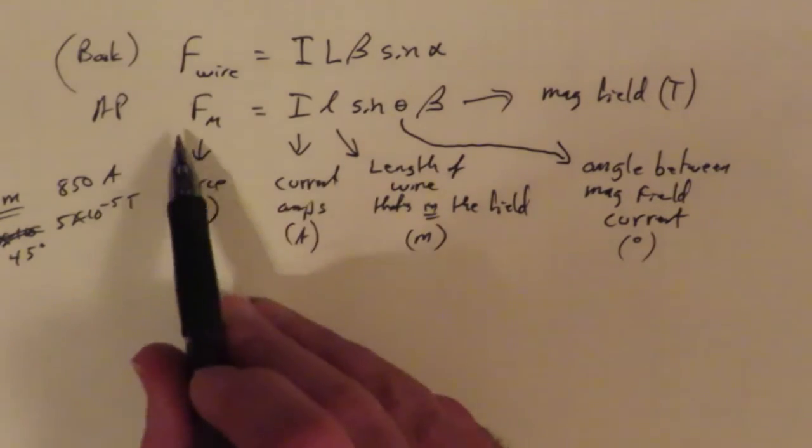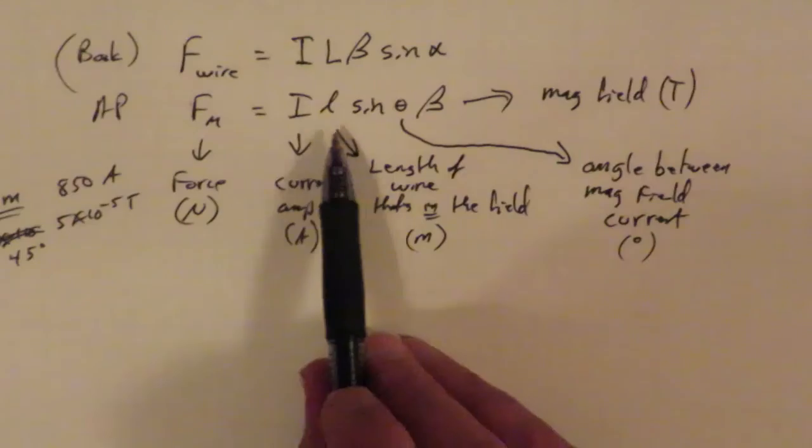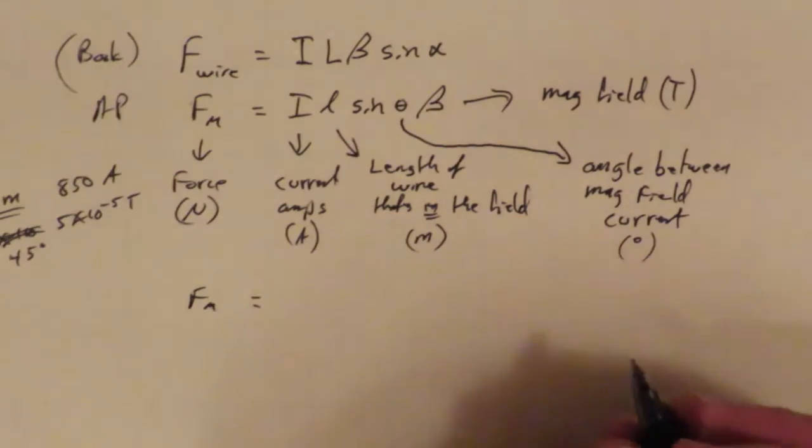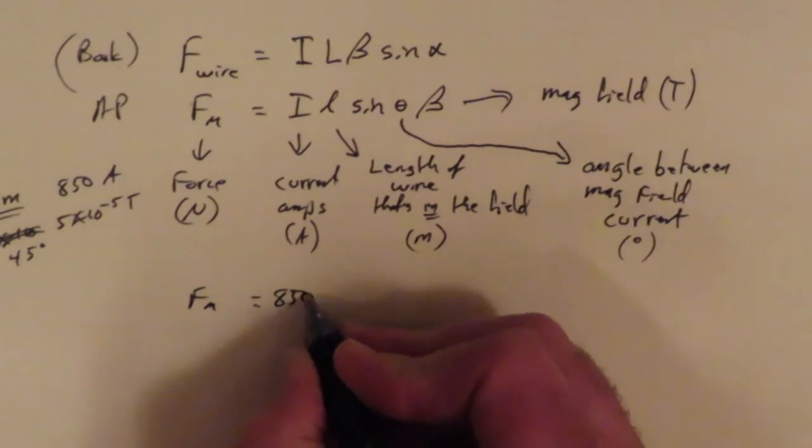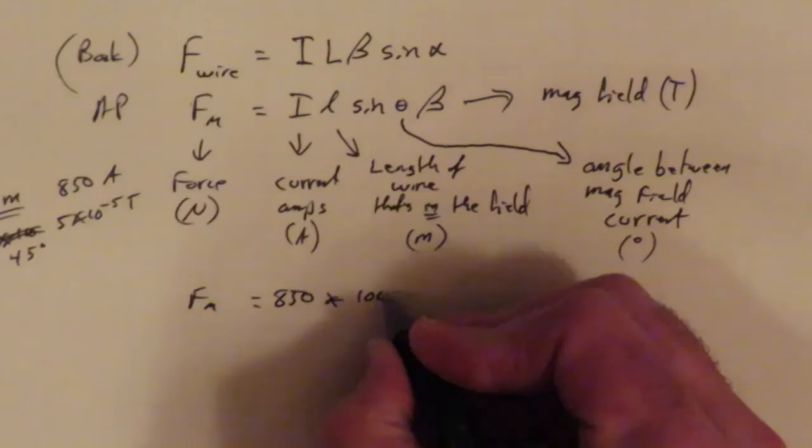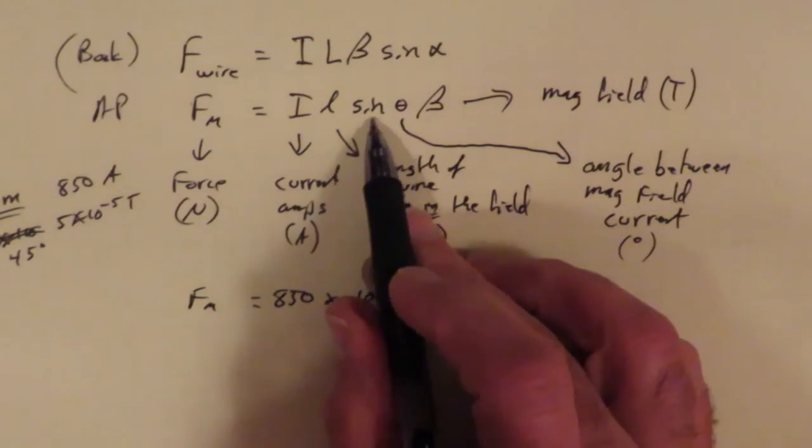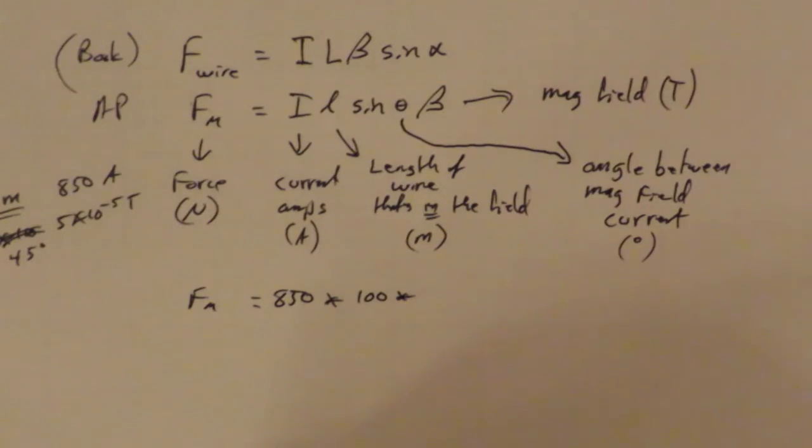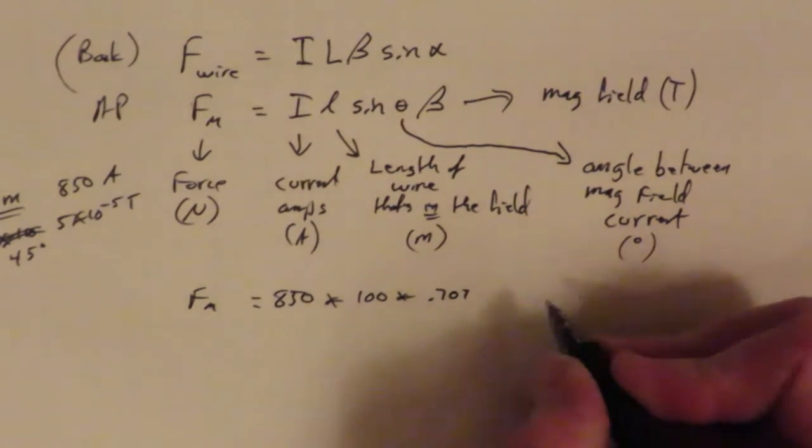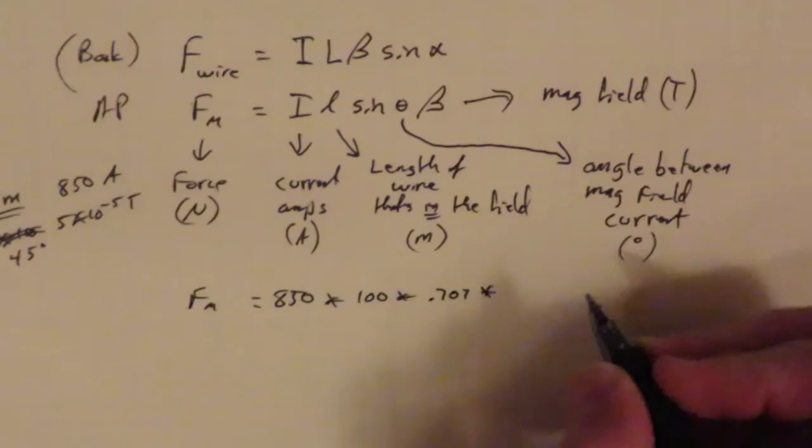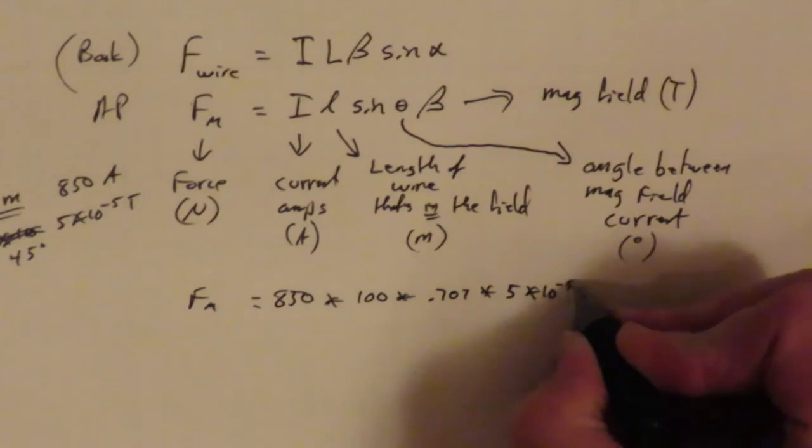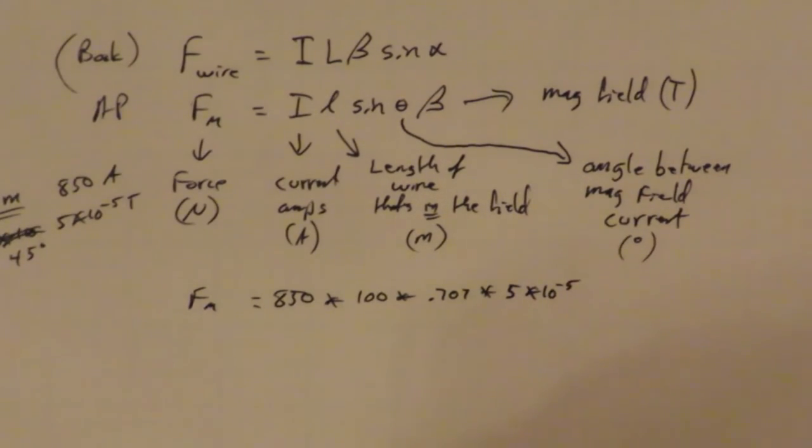Okay, so we're going to use this equation, the AP version. The magnetic force is I L sine theta B. And we'll get, so the magnetic force is equal to the current, that's I, so that's 850 amps, times the length of wire that we're interested in, which is 100 meters, times the sine of the angle between the magnetic field and the direction of the current in the wire, which is the sine of 45 degrees, which comes out to be 0.707. Pretty sure I'm right on that one. And then the strength of the magnetic field is 5 times 10 to the minus 5th Teslas. That's how you lay it out. It's basically just a plug-and-play.